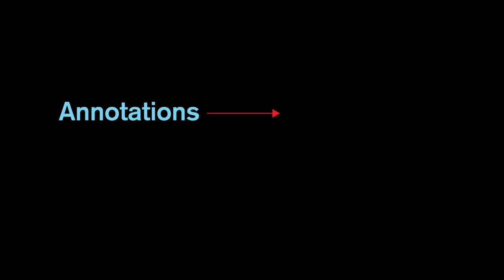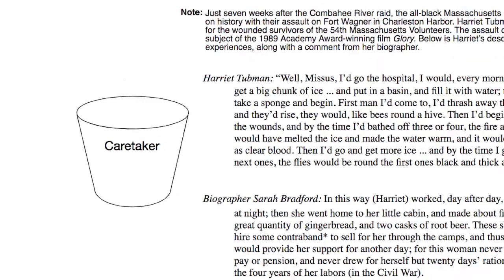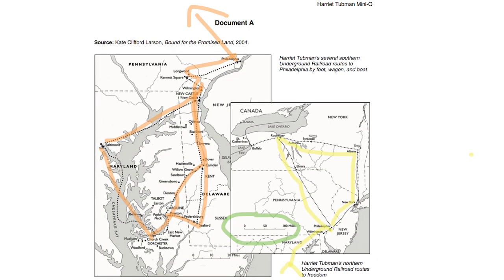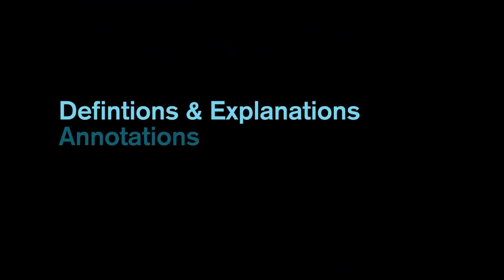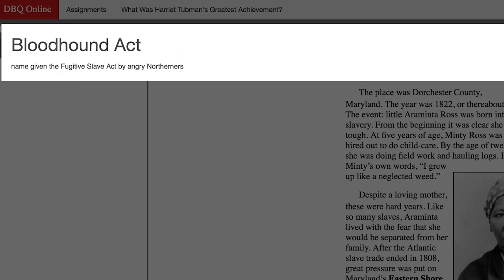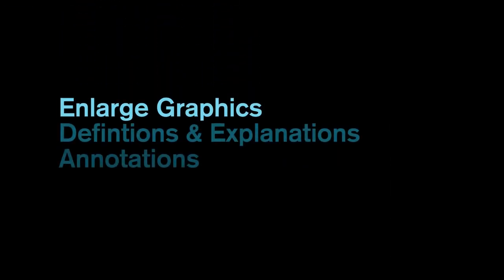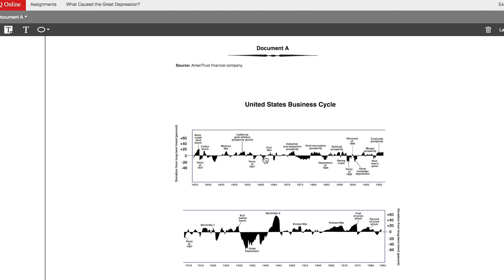These include the ability to annotate text with arrows, highlighting, sticky notes, buckets, and telestration. To find the definition of any word or explanation of a key term or concept. To enlarge maps, graphs, and other images.